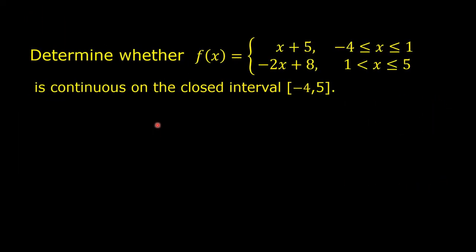Determine whether f of x, equal to x plus 5 where x is greater than or equal to negative 4 but less than or equal to 1, and equal to negative 2x plus 8 where x is greater than 1 but less than or equal to 5, is continuous on the closed interval negative 4 to 5.